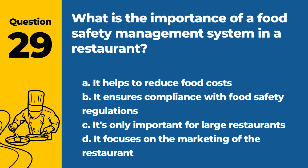Question 29. What is the importance of a food safety management system in a restaurant? A. It helps to reduce food costs. B. It ensures compliance with food safety regulations. C. It's only important for large restaurants. D. It focuses on the marketing of the restaurant. Answer: B. It ensures compliance with food safety regulations. A food safety management system is important in a restaurant as it ensures compliance with food safety regulations and helps in maintaining consistent food safety practices.